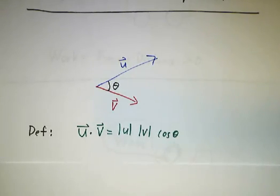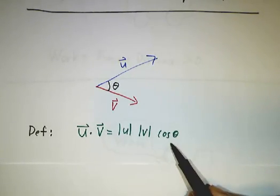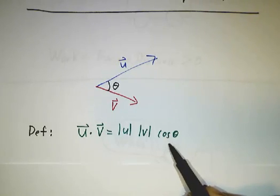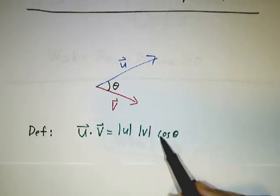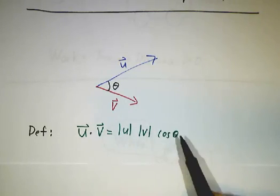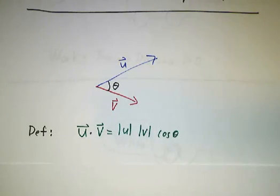Why do we care about the cosine? Why not cosine squared, or secant, or tangent, or sine, or some other function? Why do we use the cosine? The reason for this — in fact, the reason for most calculus — comes from physics.